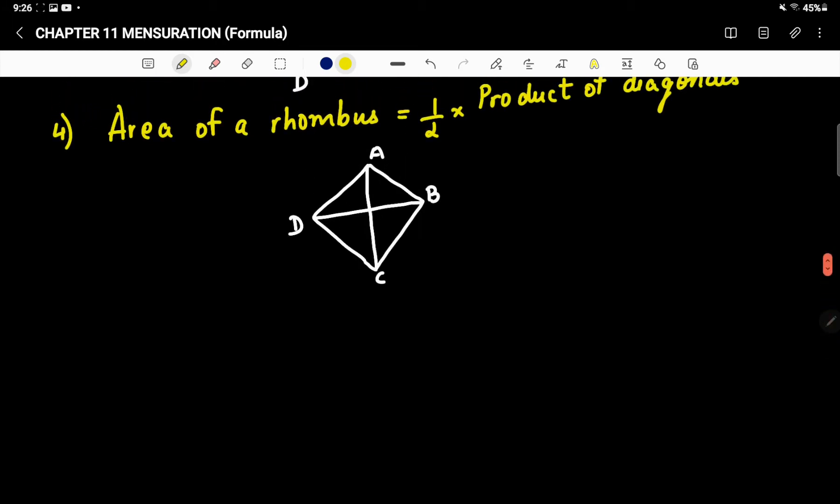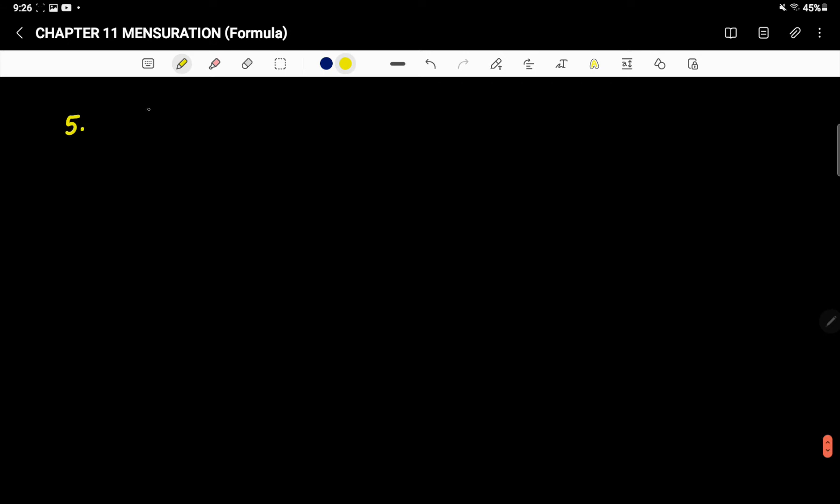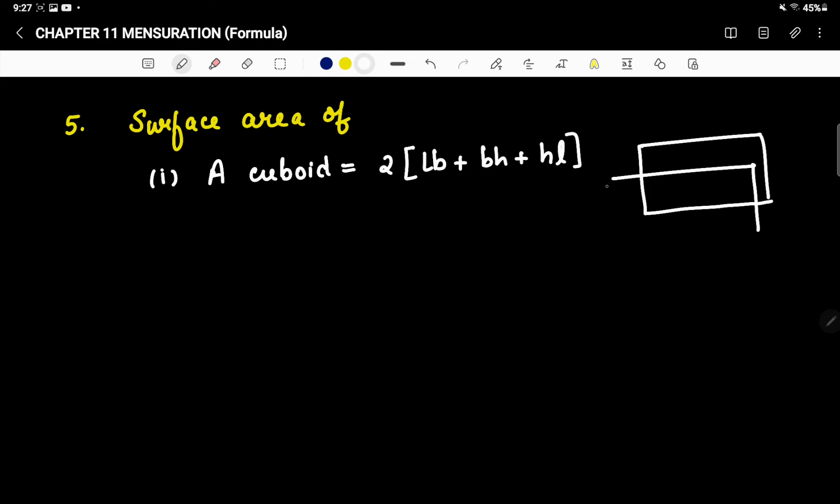Next, this is the fifth one. Now we are going to write down surface area. Surface area of first one, let's say a cuboid. Cuboid is 2[lb + bh + hl]. Cuboid looks like this.